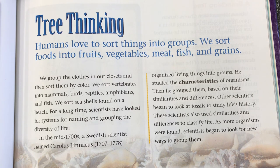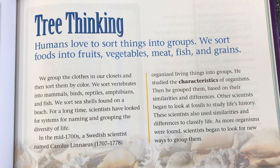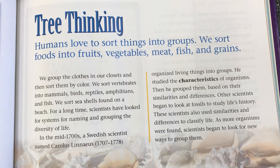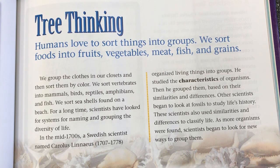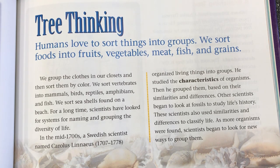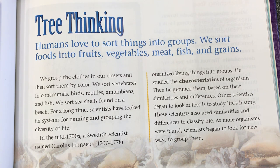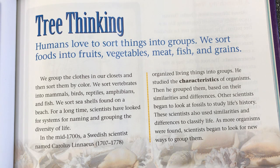Humans love to sort things into groups. We sort food into fruits, vegetables, meat, fish, and grains. We group the clothes in our closets and sort them by color. We sort vertebrates into mammals, birds, reptiles, amphibians, and fish. We sort seashells found on a beach. For a long time scientists have looked for systems for naming and grouping the diversity of life.